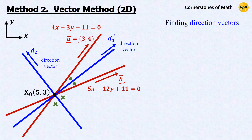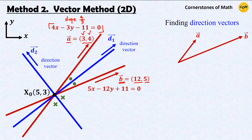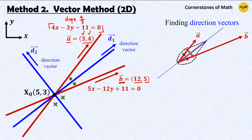We obtain direction vector A as (3, 4), because from the equation, if x increases by 3 units then y increases by 4 units, corresponding to a slope of 4/3. Similarly, we obtain direction vector B as (12, 5). Let us draw these vectors with the same starting point, because we are about to do some vector addition. In order to obtain a vector aligned with the angle bisector, we must add two vectors in the directions of A and B that have the same length. Therefore, let us consider the vectors in these directions with length 1 — that is, the unit vectors in the directions of A and B.